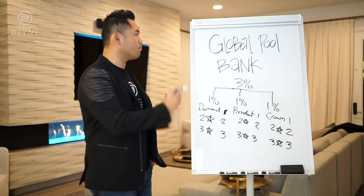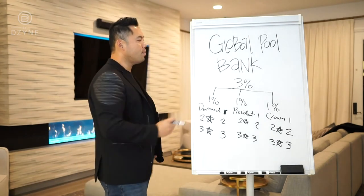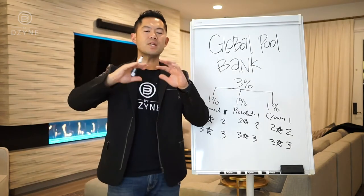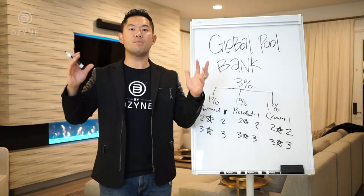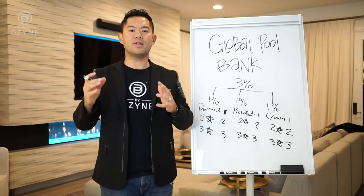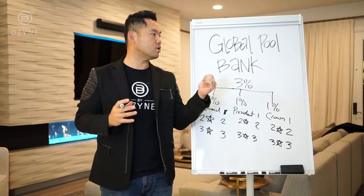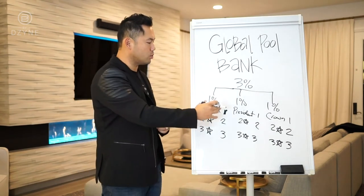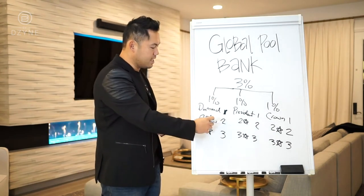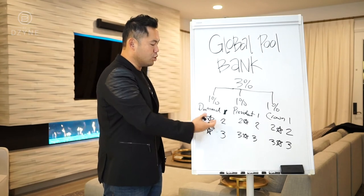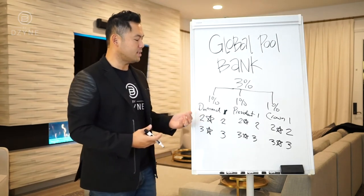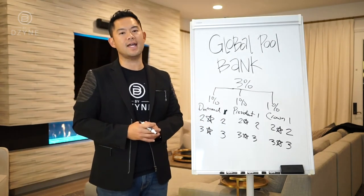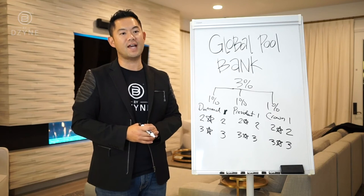To recap the Global Pool Bank: we take three percent of global volume every single month, you must be a Pro Builder to qualify, we divide it into three pools, and within each pool you earn shares based on your rank. If you're a Founder, you earn an extra share for life.